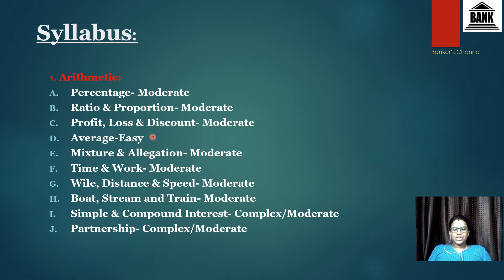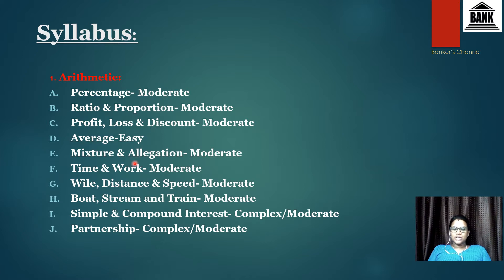Next one is average. This is the basic foundation for most topics in quantitative aptitude. Whenever we get a question from average, it will be an easy one. We need to be strong in average as well as in percentage because all topics revolve around these two, plus ratios and proportions. Average will be easy — we can expect two to three questions.